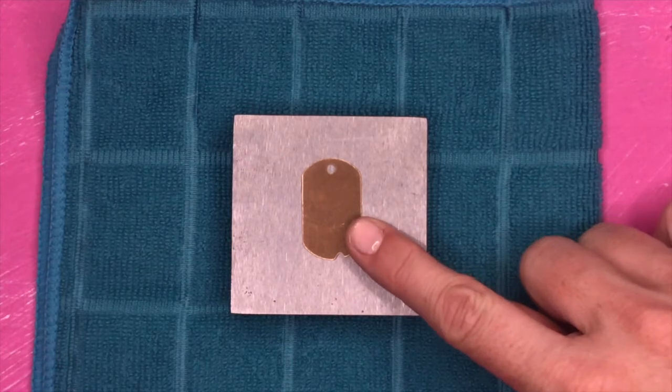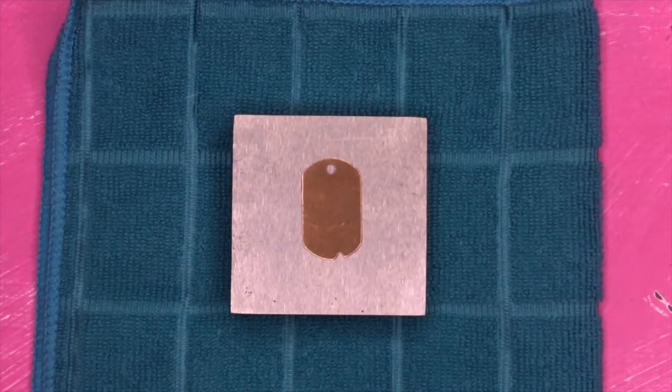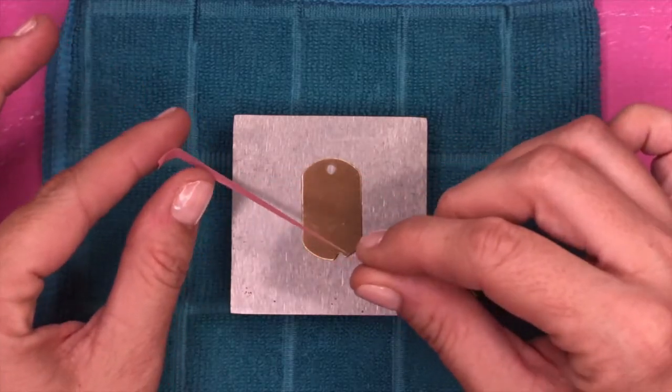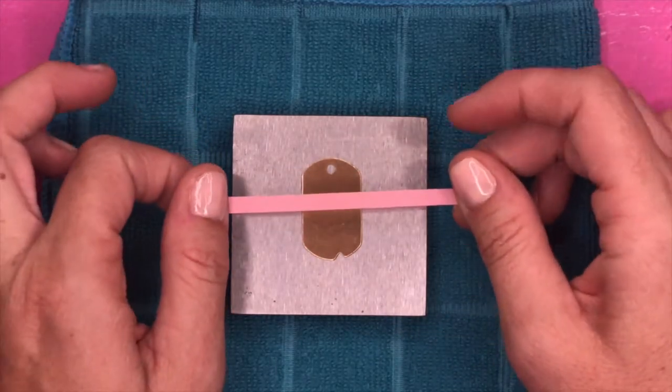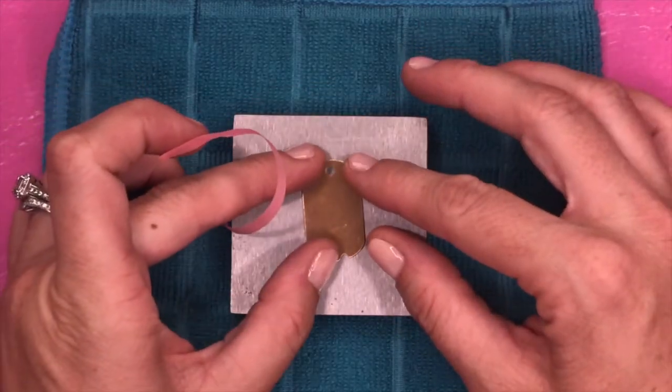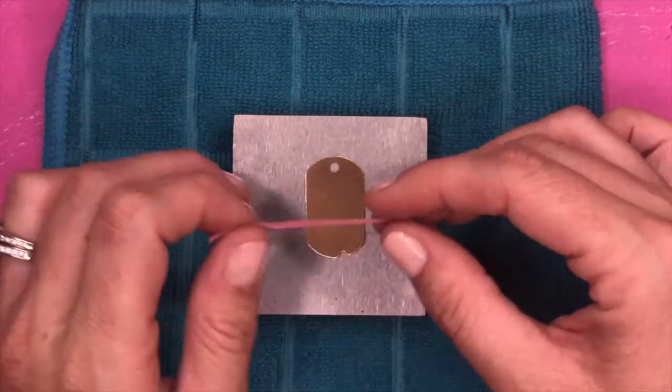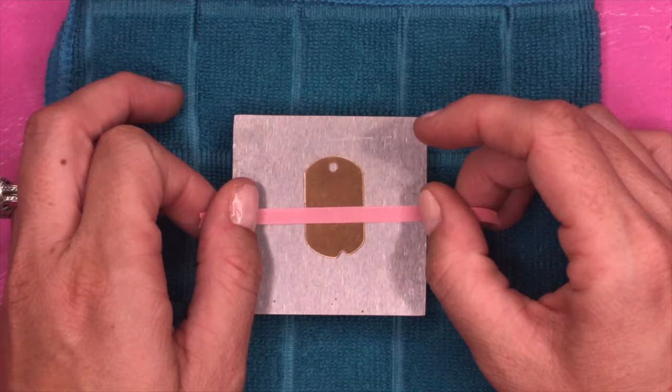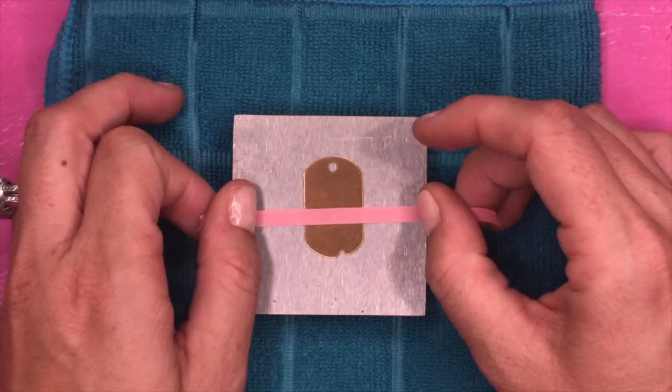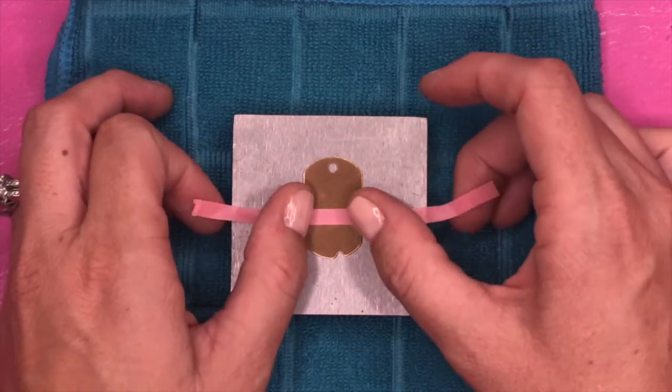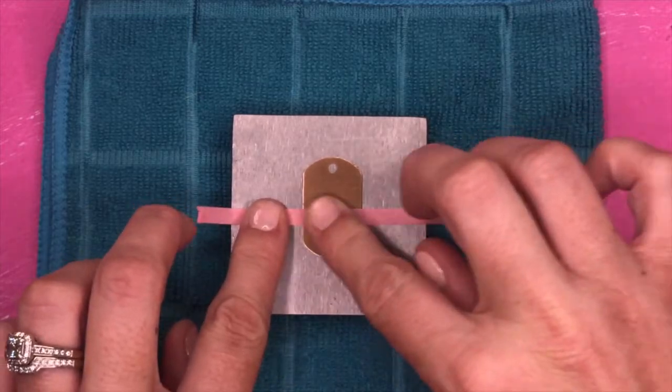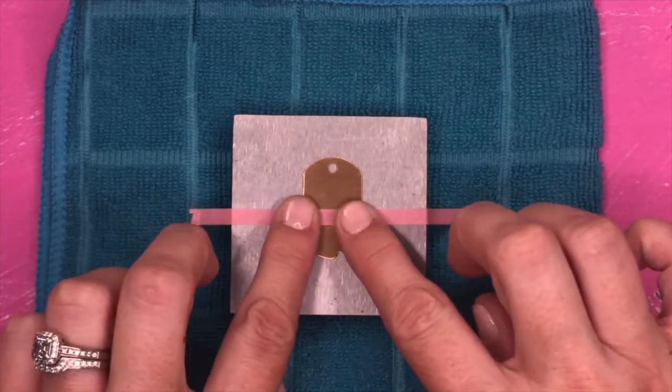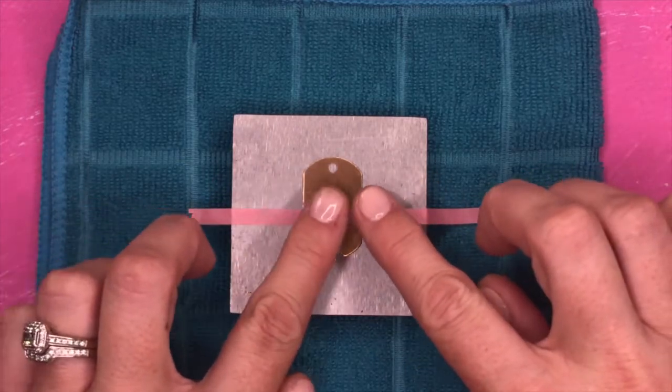I've chosen the dog tag shape here and I'm going to stamp the word love. I want to show you what it looks like to stamp using a piece of tape as a line to keep your letters straight. This also serves two purposes because it helps you keep your plate intact and won't move when you're stamping. And it also helps you achieve that straight stamp line.